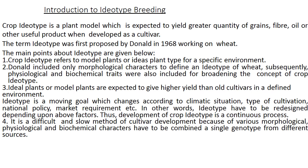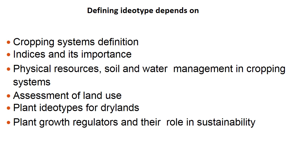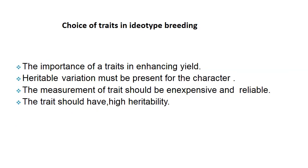Development of crop idiotype is a continuous process; it is a difficult and slow method of cultivar development because various morphological, physiological, and biochemical characters have to be combined into a single genotype from different sources. Idiotype is a moving goal which changes according to climatic situation, type of cultivation, national policy, and market requirements. Defining idiotype depends on several factors including cropping system, physical resources, soil and water management, and plant growth regulators.